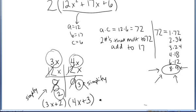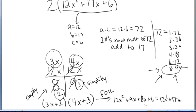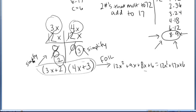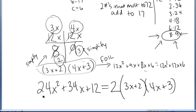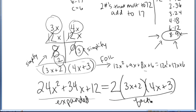Now notice, when you multiply this out using FOIL, you actually get back 12x squared plus 9x plus 8x plus 6, which is 12x squared plus 17x plus 6, which is exactly what we started with. So the original trinomial was 24x squared plus 34x plus 12, and it factors as 2 times 3x plus 2 times 4x plus 3. This is the expanded version of that polynomial, and this is the factored version.